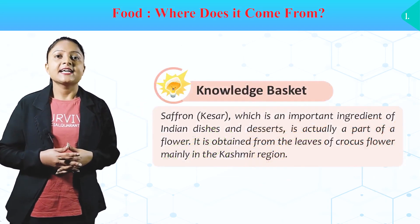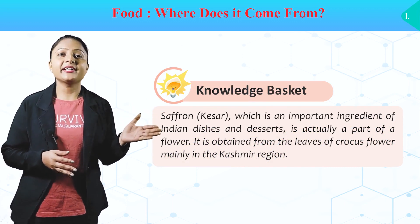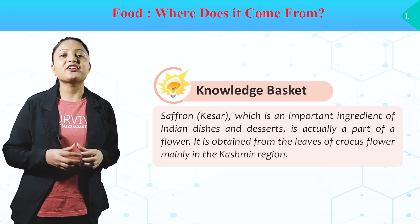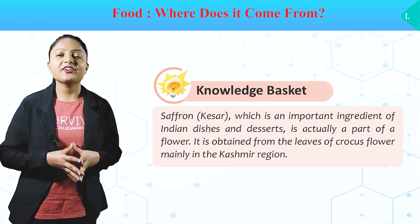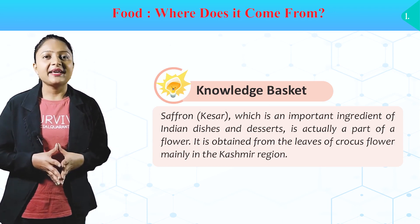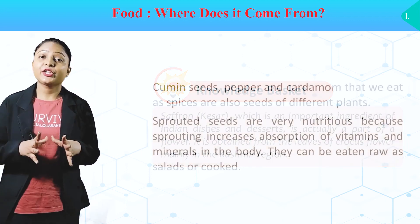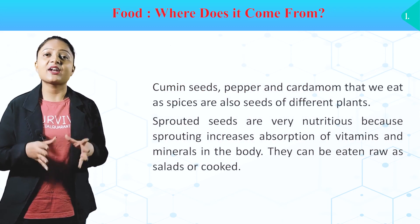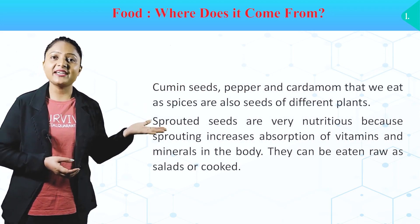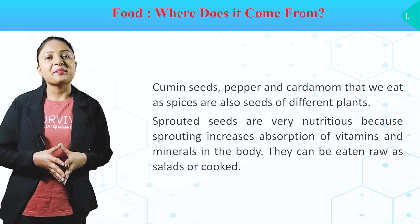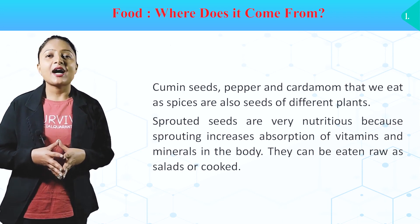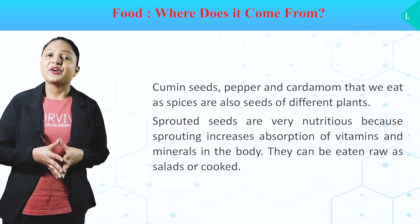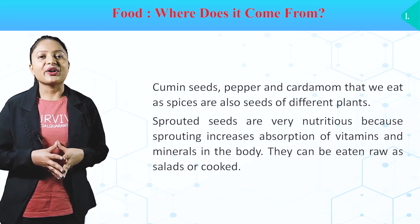Knowledge basket. Saffron, or keser, which is an important ingredient of Indian dishes and desserts, is actually a part of the flower. It is obtained from the flowers of the crocus plant, mainly in the Kashmir region. Cumin seeds, pepper and cardamom that we eat as spices are also seeds of different plants. Sprouted seeds are very nutritious because sprouting increases absorption of vitamins and minerals in the body. They can be eaten raw as salads or cooked.